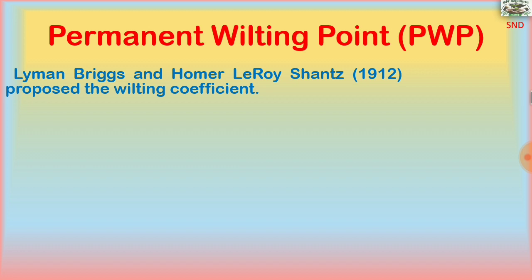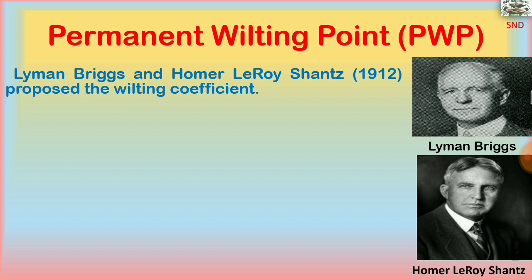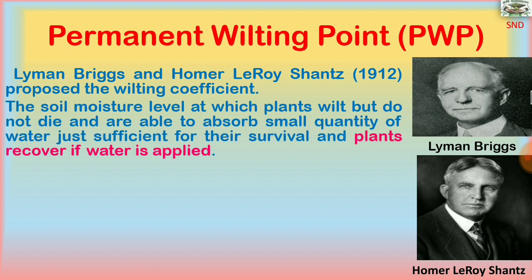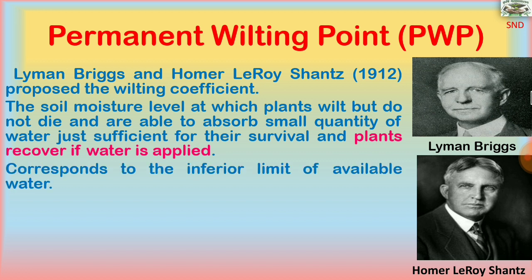The permanent wilting point, also called the wilting coefficient, was proposed by Lehman Briggs and Homer Leroy Shantz in 1912. It is the soil moisture level at which plants wilt but do not die, and are able to absorb a small quantity of water just sufficient for their survival. The plants recover if water is applied.